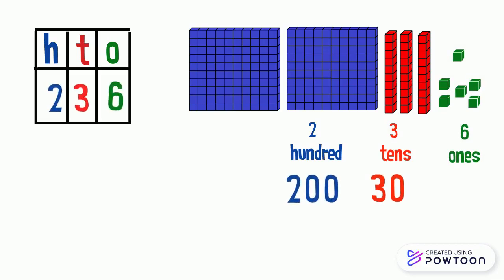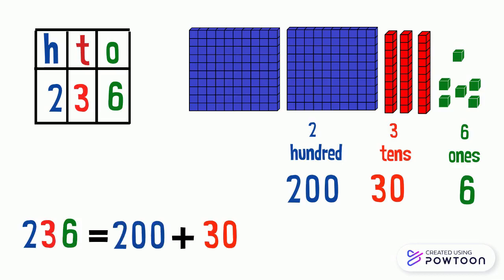Two blocks of 100 equals 200. 3 tens equals 30. 6 ones equals 6. So the expanded form of the number 236 is 200 plus 30 plus 6.